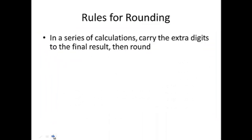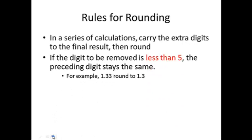Rules for rounding. If we have a series of calculations, we would carry the extra digits to the final result and then we would round. Now with rounding, we already looked at this. If the digit to be removed is less than five, the preceding digit will stay the same. Let's say if this last three is the one to be removed, so what does that three do to that three? Well, it doesn't round it up. It stays the same. So here's our final answer.